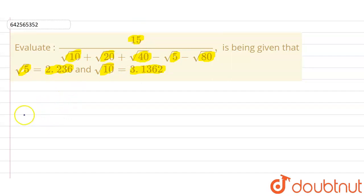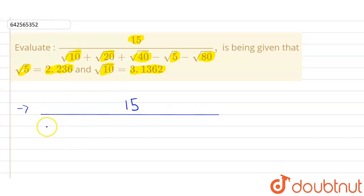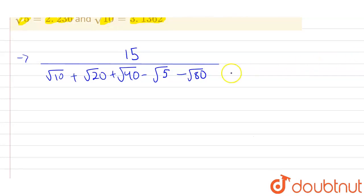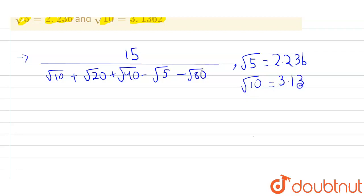Let's write the given equation, which is 15 upon (√10 + √20 + √40 − √5 − √80). It is given that √5 = 2.236 — let's call this equation 1 — and √10 = 3.1362 — let's call this equation 2.